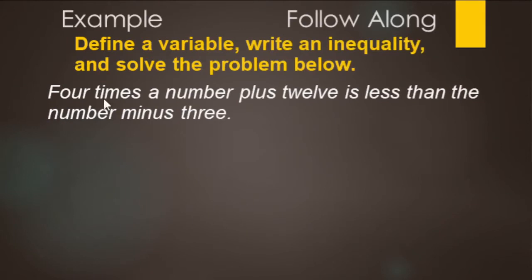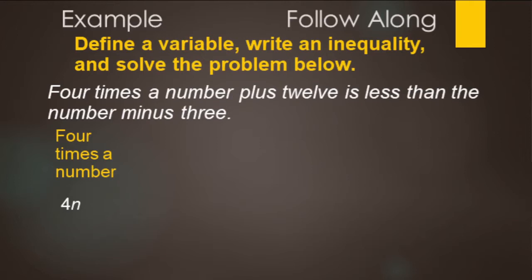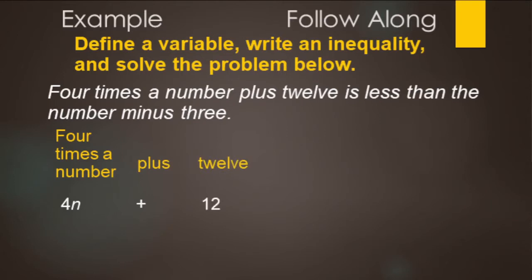We have: four times a number plus 12 is less than the number minus three. So four times a number — we're going to use the variable n for the number. Four times a number would be 4n. Next up, we have plus 12.